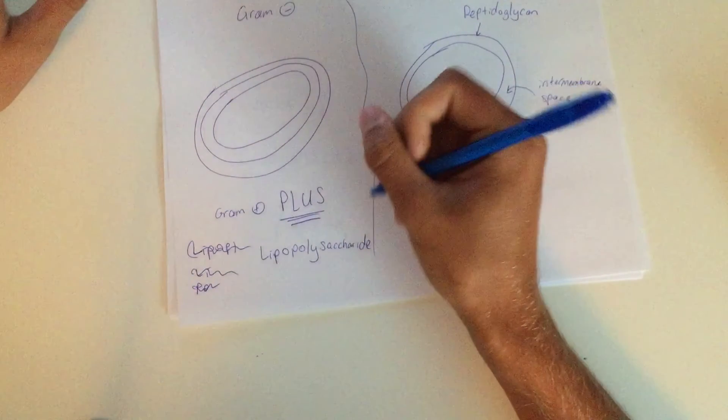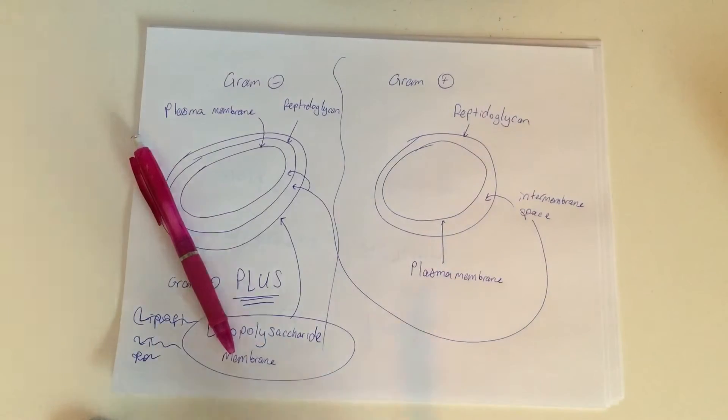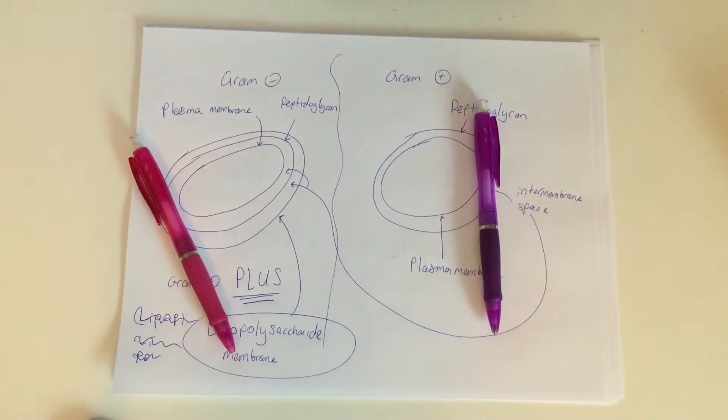For now, we're going to jump into the gram-positive bacteria and take a closer look. Furthermore, when doing a gram stain, gram-negative bacteria turns pink and gram-positive turns purple.